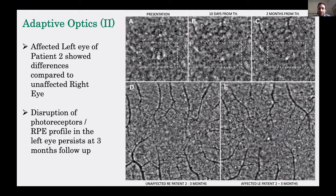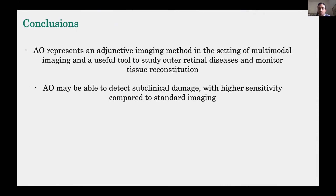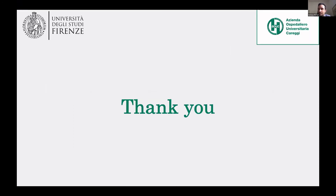We can see the affected eye of patient 2 over the follow-up with tissue remodeling and partial reconstitution. Comparing the affected eye and the unaffected eye of patient 2, we see a difference in tissue architecture even at three months follow-up, despite complete recovery on OCT and in visual acuity. In conclusion, adaptive optics represents an additional tool as it is useful in assessing outer retinal diseases and monitoring tissue reconstitution in multimodal imaging. Potentially, adaptive optics may detect subclinical damage not seen in routine imaging.